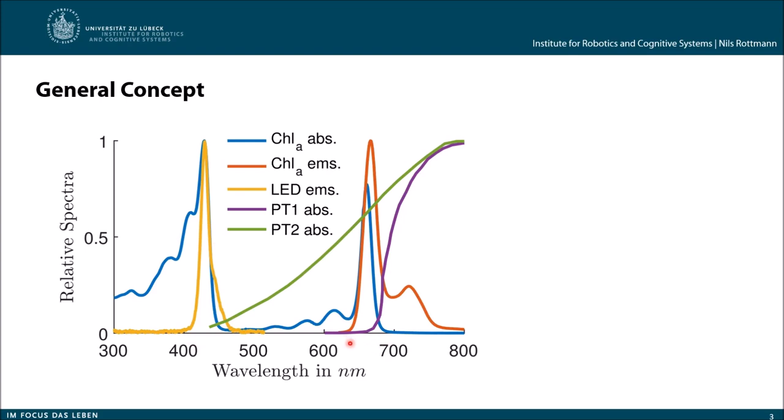The chlorophyll emission spectra has one peak and is given here in red, roughly at 680 nanometers. We excite our chlorophyll fluorescence with a consumer LED around 430 nanometers. This is the yellow line, the consumer LED spectra.